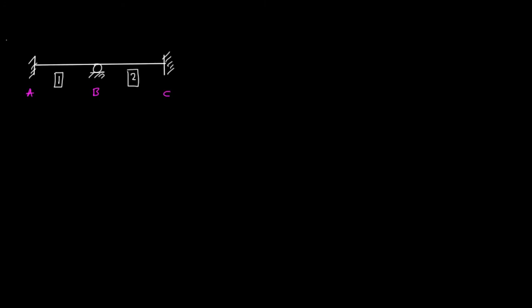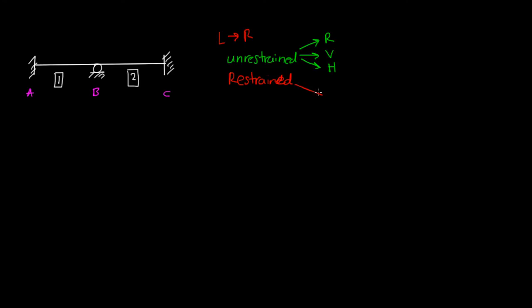When we label degrees of freedom, we label everything from left to right, and then from unrestrained to restrained. For unrestrained, we do rotational degrees of freedom first, then vertical, then horizontal. For restrained, we follow the same order: rotations first, then verticals, then horizontal degrees of freedom.